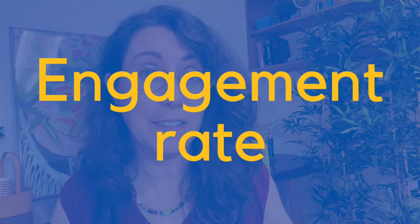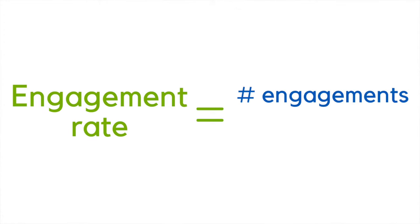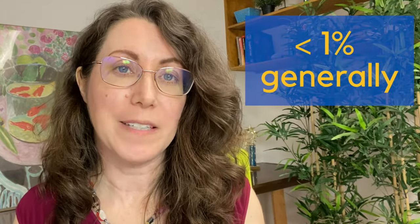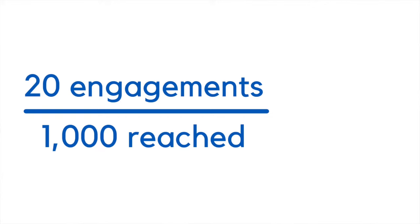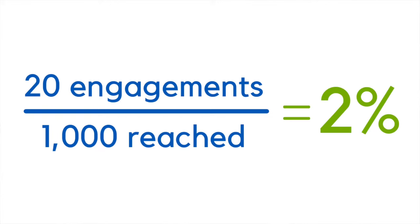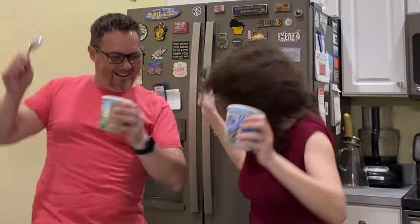The next thing to look for is engagement rate. That compares how many people are engaging to how many people saw the post — in other words, what are the chances that when they see your post, they'll interact with it? This really helps you gauge how interesting your posts are. Engagement rates are generally less than 1%. So if your post was delivered to 1,000 people and 20 people engaged, that's a 2% engagement rate — good job. It might not feel like it's good, but it is. If your engagement rate is really low, consider the tips provided earlier in this video and check out the video I'll share at the very end.